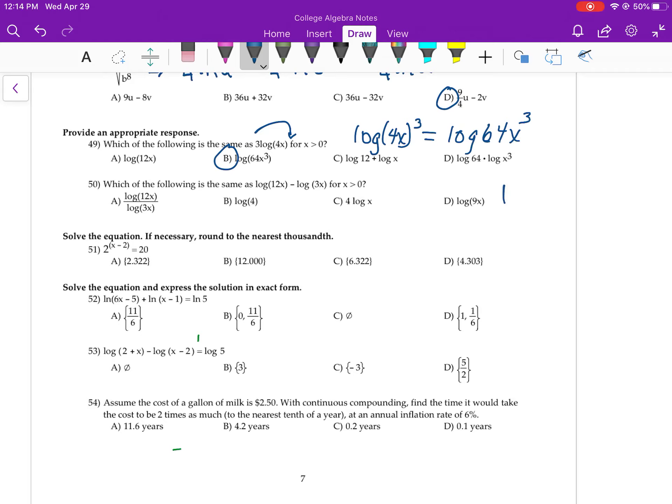Number 50. When I subtract two logs, I can write it as the division of the arguments. I only write the log one time. 12x divided by 3x is 4. So the answer is B.